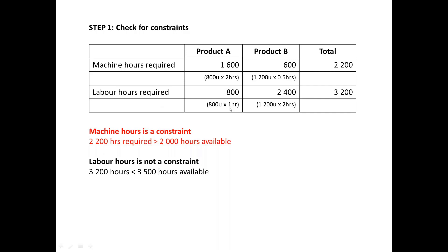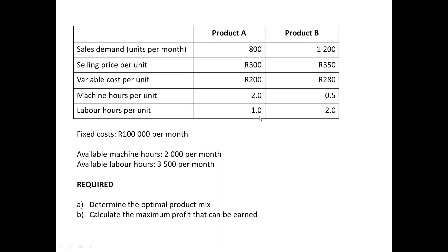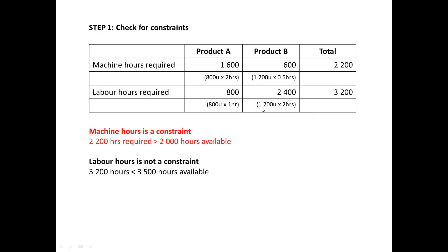Now we test labor hours: 800 units × 1 labor hour per unit = 800 hours for A; 1,200 units × 2 hours per unit = 2,400 hours for B — total 3,200 labor hours required, which is less than the 3,500 available. So labor is not a constraint. If there were two constraints with conflicting rankings, you'd need linear programming — but at second-year level there will always be just one binding constraint, so don't worry about that.